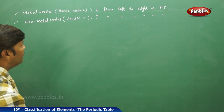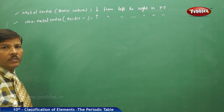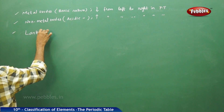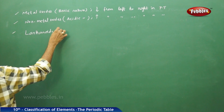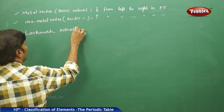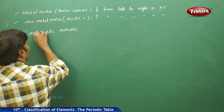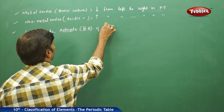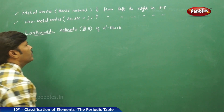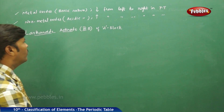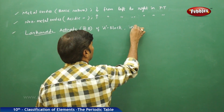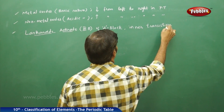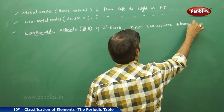We also have some more types of elements — that is lanthanoids and actinoids. Both these sets of elements belong to the third B group of the D block, and they are called inner transition elements.